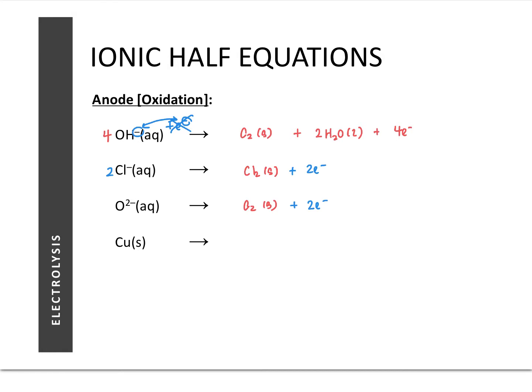For the last example, copper metal is a reactive electrode. Whenever a reactive electrode is used at the anode, it can be oxidized — it is oxidized to its metal ion, and we add two electrons to balance the charge. The important rule: if your reactants are positively charged, they tend to be reduced, so we add electrons to the reactants. If your ions are negatively charged, we cannot add more electrons to them, so the electrons must appear on the other side of the equation.